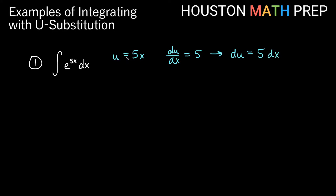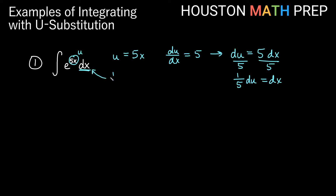The way we write this for u-substitution, we'll say that du is equal to 5 dx. So if we have u equal to 5x, this becomes e to the u. The only thing we need to replace besides that is dx. Looking at our du statement, we don't have exactly dx — it's off by a constant multiple. So we'll need to turn this into dx by dividing both sides by 5. We get 1/5 du is equal to dx. So we'll have e to the u times 1/5 du.